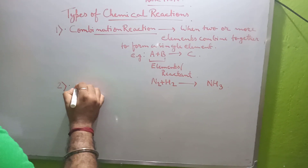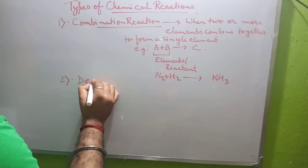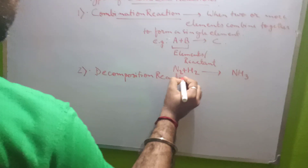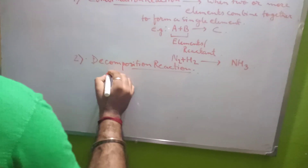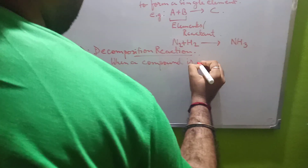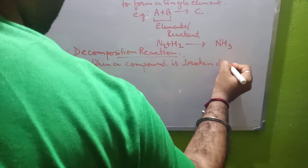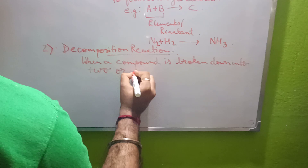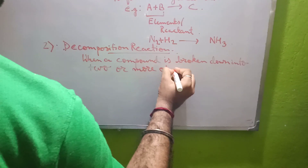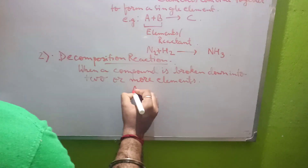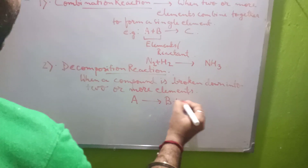Number two is decomposition reaction. As the name suggests, when a compound is broken down into two or more elements, it is known as a decomposition reaction. Here only one compound A will be there and it will give two products, B and C.